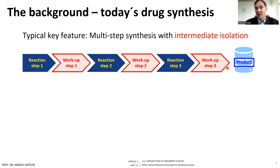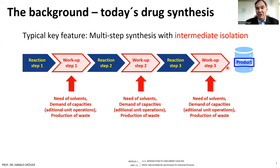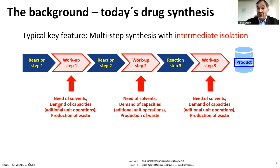But at the same time, if you look at process efficiency, costs, and also sustainability, there are some drawbacks to conducting chemistry in such a form. In all of these workup steps, you typically consume solvents and require additional capacities. The workup steps are exactly the stages which often require a range of so-called unit operation steps — extraction, distillation, drying, precipitation, filtration, and so on — and consequently these are also the steps in which a substantial portion of waste is produced.